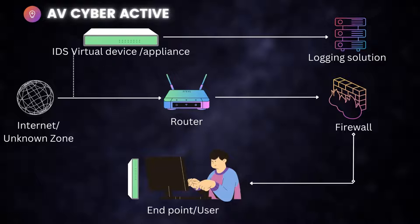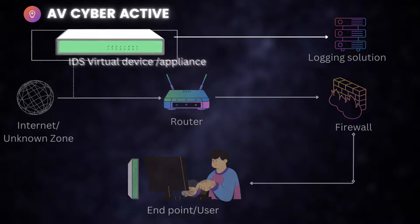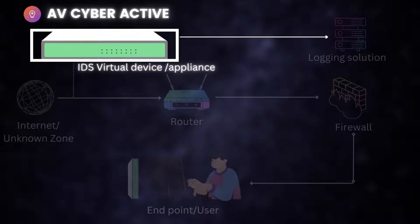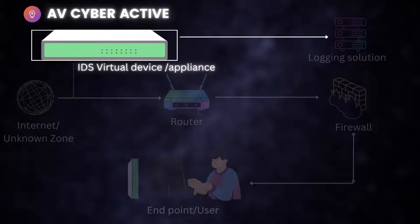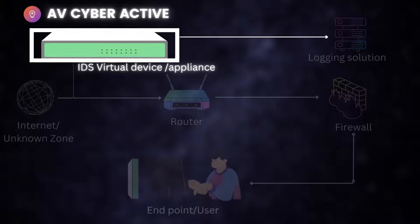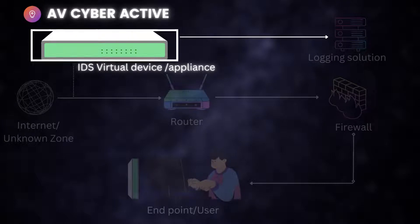The IDS device is connected outside, placed in parallel to your switches or in parallel to your router. You can also log network captures of what's happening in your environment to a logging solution such as a SIEM or a logging monitoring system like Zabbix.